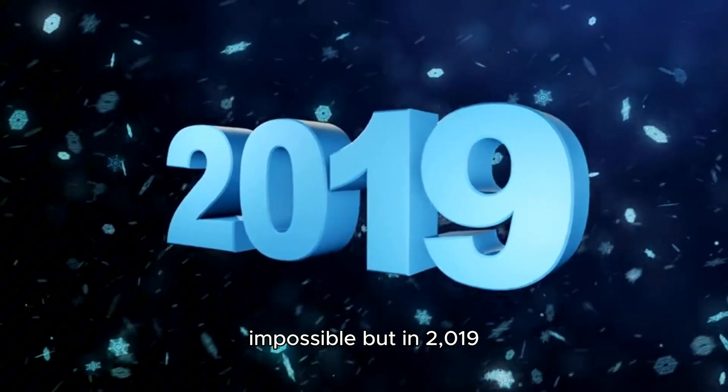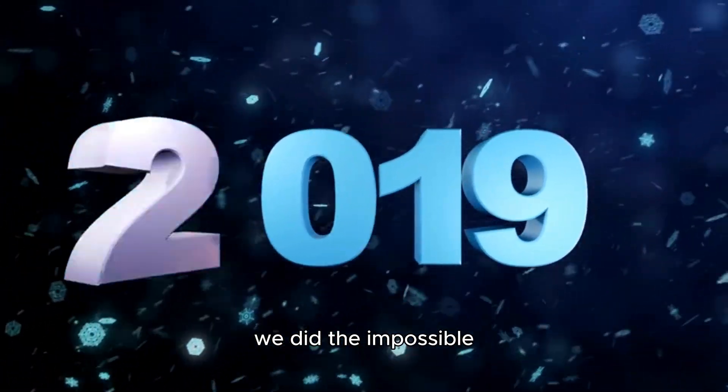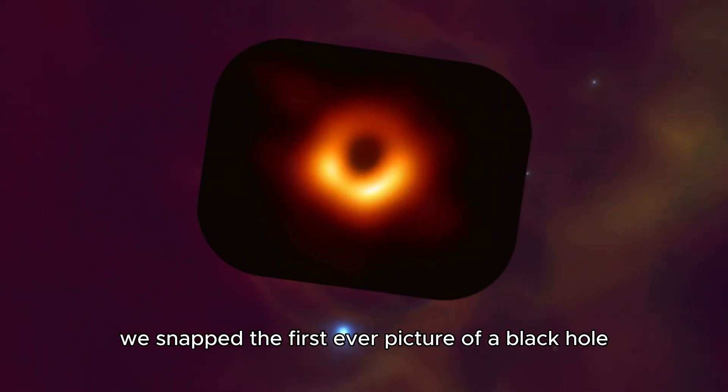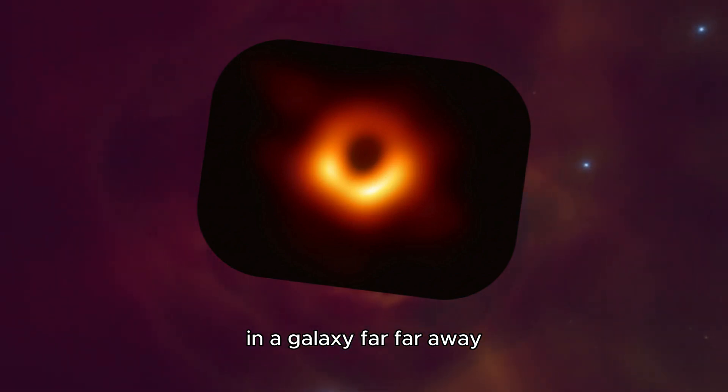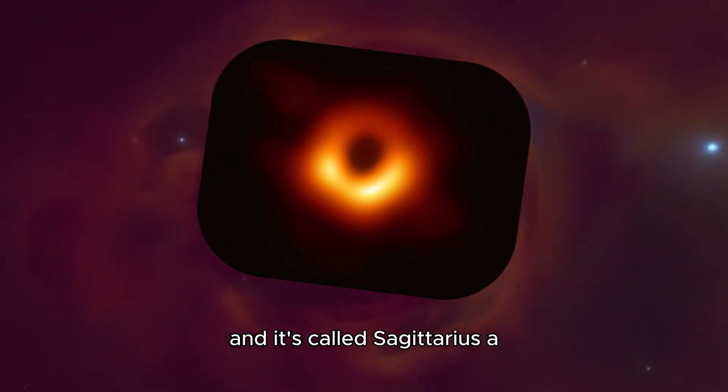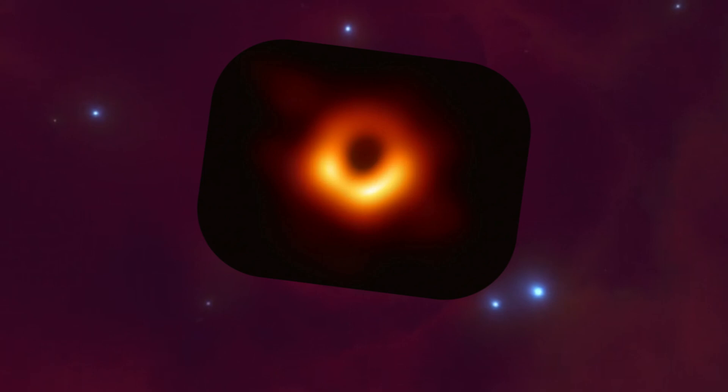But in 2019, we did the impossible. We snapped the first-ever picture of a black hole in a galaxy far, far away, and it's called Sagittarius A, or Sagittarius A-star for short. But how?